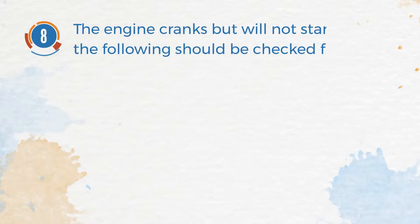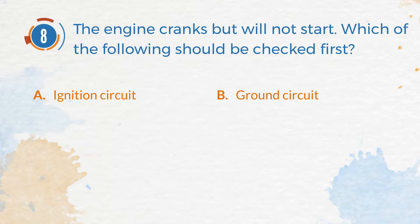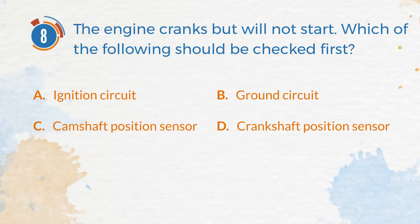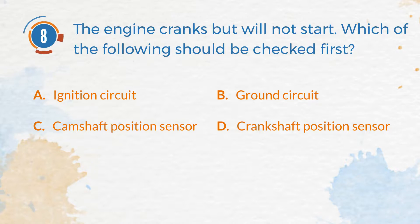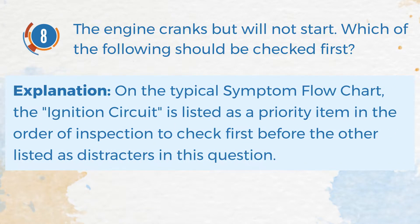Number 8. The engine cranks but will not start. Which of the following should be checked first? A. Ignition circuit. B. Ground circuit. C. Camshaft position sensor. D. Crankshaft position sensor. The correct answer is A. Ignition circuit. Explanation: On the typical symptom flow chart, the ignition circuit is listed as a priority item in the order of inspection to check first before the other listed distractors in this question.